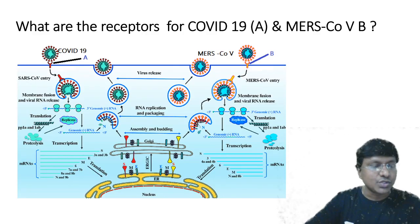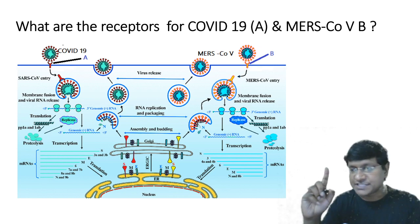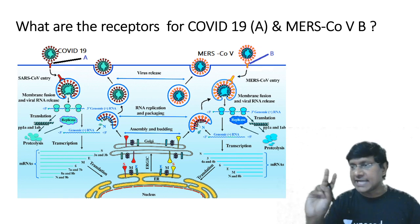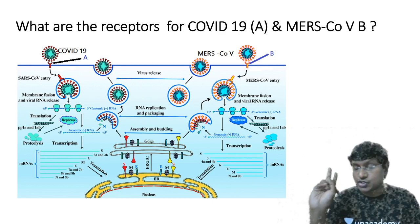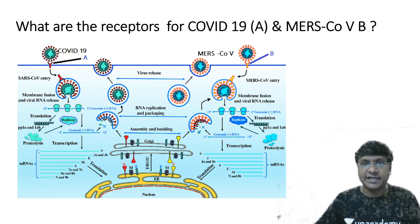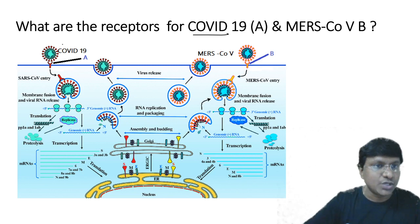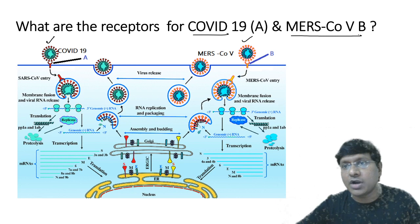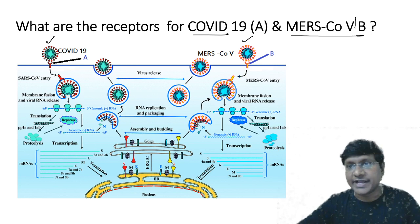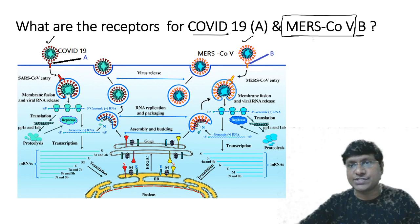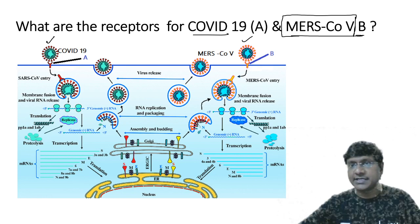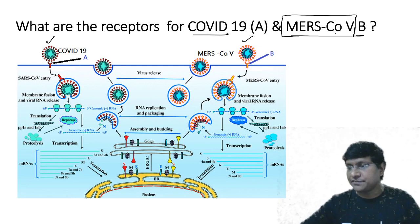With the help of the spike protein present in COVID-19, the virus binds to receptors on human cells. I am showing two viruses: COVID-19 and MERS coronavirus. Can anyone tell me what MERS coronavirus is? MERS stands for Middle Eastern Respiratory Syndrome.